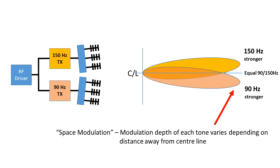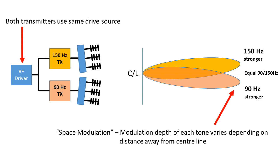The modulation depth depends on where the receiver is in the space in front of the antenna system. When to the right of the centreline the 150 Hz beam is stronger, whereas to the left it's the 90 Hz beam. Down the centreline the two tones are equally strong, and this is the indication that the pilot uses for guidance to the runway.